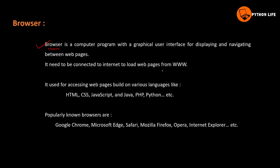A browser needs to be connected to the internet to load web pages from the World Wide Web. It is used for accessing web pages built on various languages like HTML, CSS, JavaScript, Java, PHP, Python, etc. HTML, CSS and JavaScript are front-end languages, while Java, PHP, Python and SQL are used on the back end.